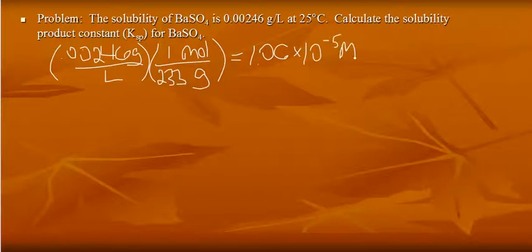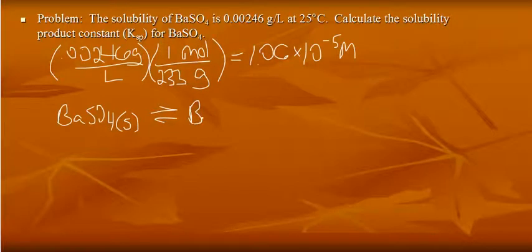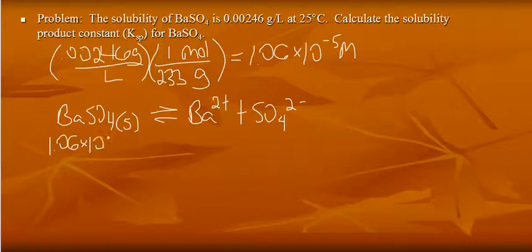We want to calculate Ksp for barium sulfate. So here's my equation. Barium sulfate breaks apart to a small extent into these ions. If the solubility of barium sulfate is 1.06 times 10 to the negative 5th, because the coefficients are 1 to 1 to 1, the solubilities of both ions are also 1.06 times 10 to the negative 5th.